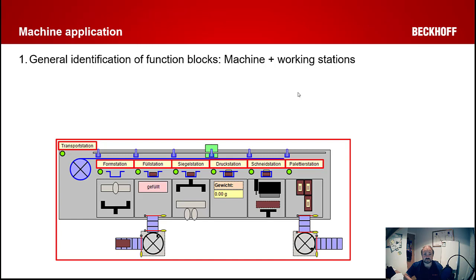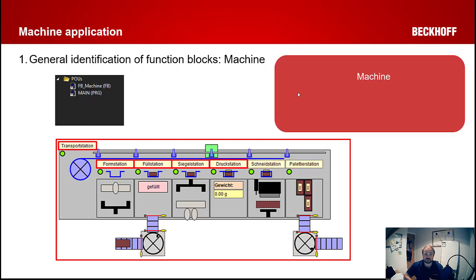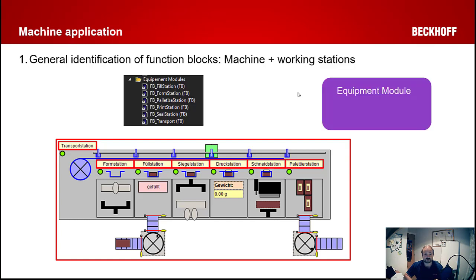Let's take a simple illustration of a machine with multiple sections: a transport system for the entire system, a forming station, filling station, sealing, weighing, packaging, and palletizing. We can break that up using the SPT framework into constituent parts. The machine part covers the entire machine — so that's the general state machine for the whole thing, the HMI interface to run and operate the entire machine, and relevant information passed up from individual substations, which are formed by our equipment modules: the transport section, forming station, filling station, etc.